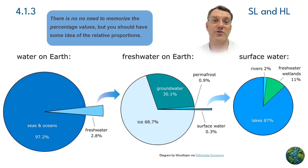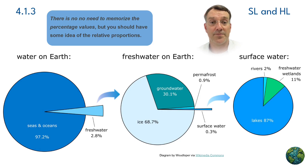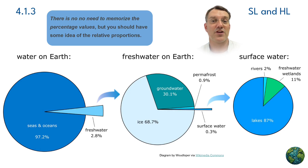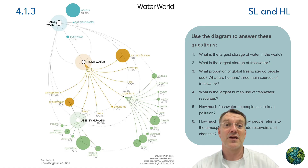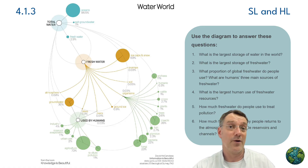The third pie chart shows that of that 0.3% of freshwater that's on the surface, most of it — about 87% — is in lakes, 11% is in wetlands, and only 2% is in rivers. This visual representation helps you grasp just how limited accessible freshwater is on our planet, and that highlights why water conservation and management are so important. A flow diagram presents the same information in a different way, looking like water is flowing from one part of the system to another, which it is.